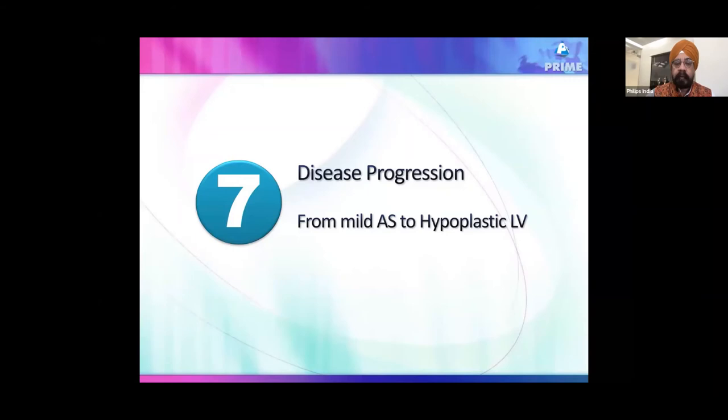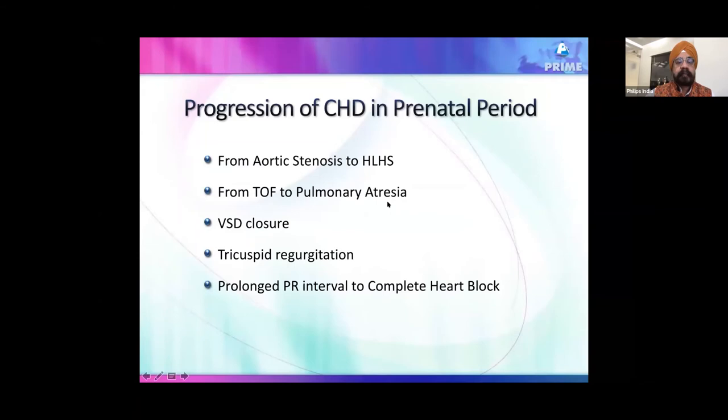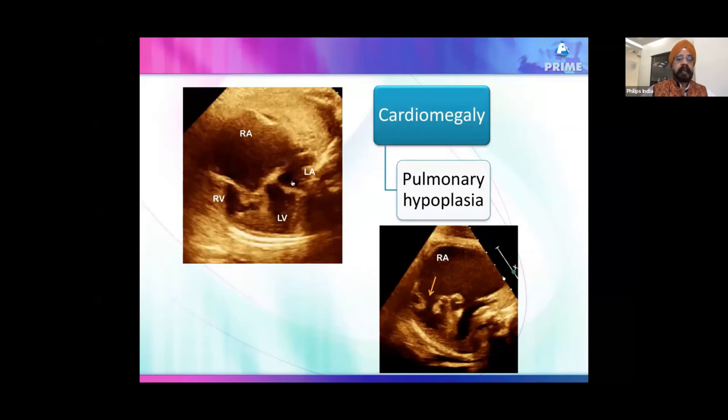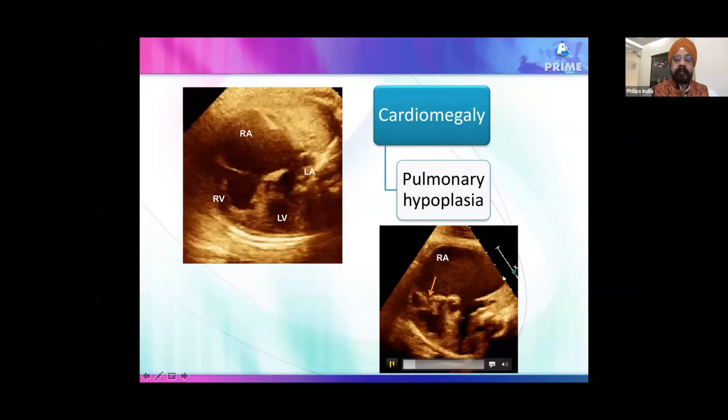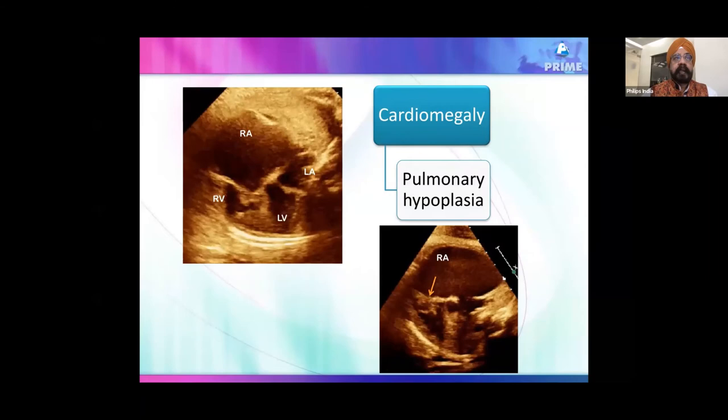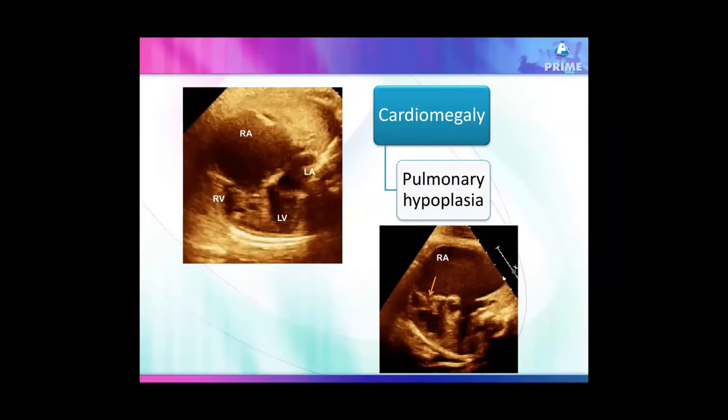Other important issues include: aortic stenosis progressing to hypoplastic left heart; tetralogy of Fallot leading to pulmonary atresia becoming ductal-dependent; VSDs can close; tricuspid regurgitation is important; and cardiomegaly must be assessed — whether due to Ebstein anomaly or tricuspid dysplasia, where a thickened tricuspid valve produces pulmonary hypoplasia as the enlarged heart compresses the chest cage.